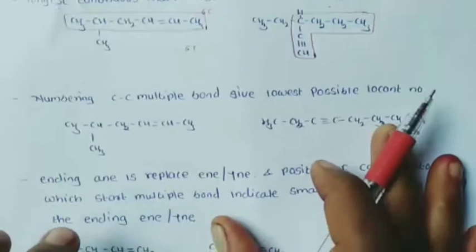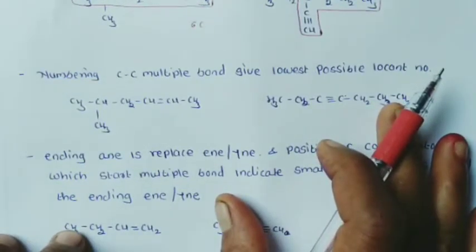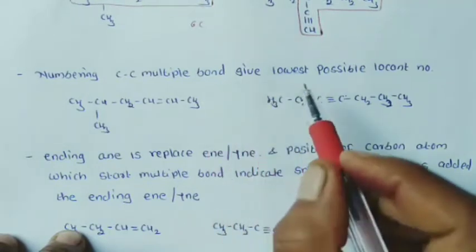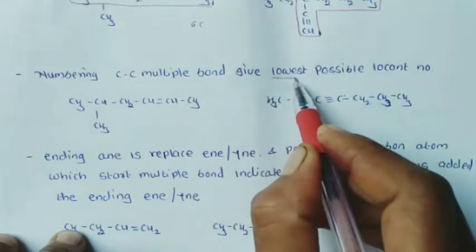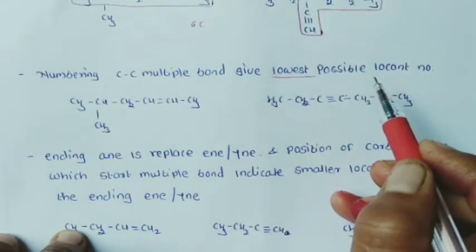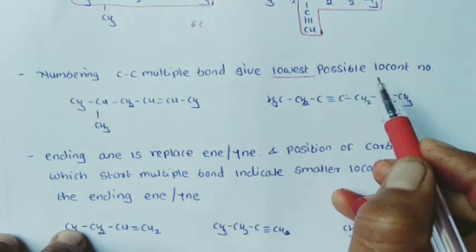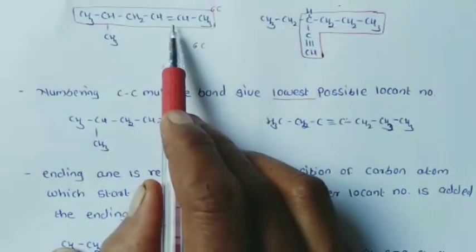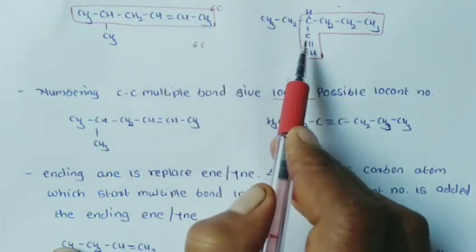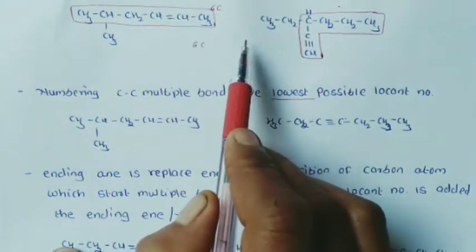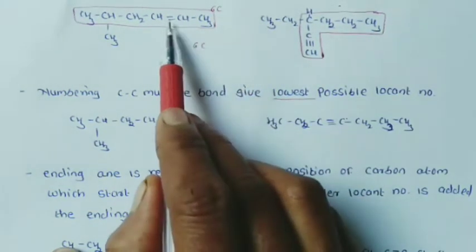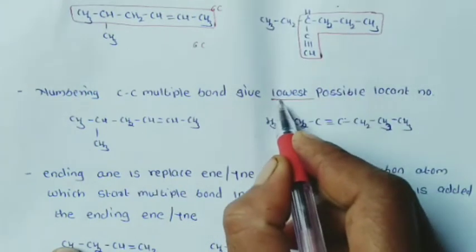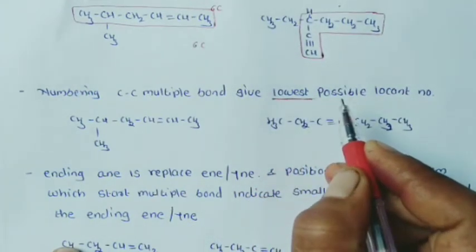The second rule: numbering of the carbon chain. The carbon-carbon multiple bond must be given the lowest possible locant number. So when numbering the longest chain, the carbon-carbon multiple bond is assigned the lowest possible number.